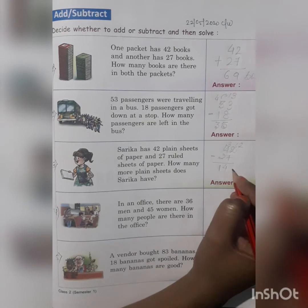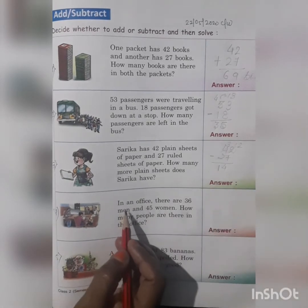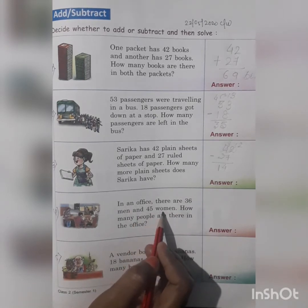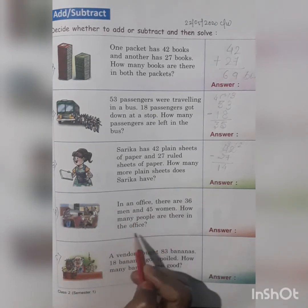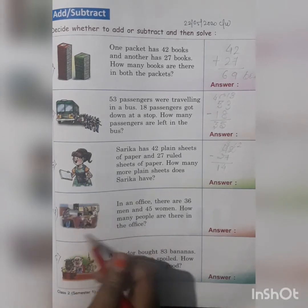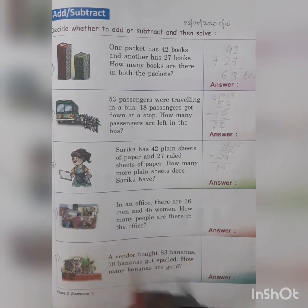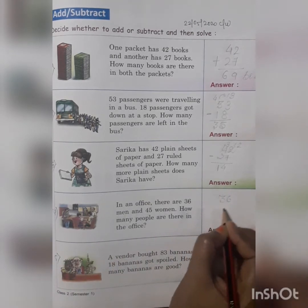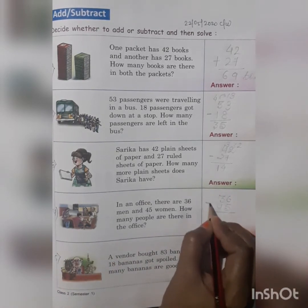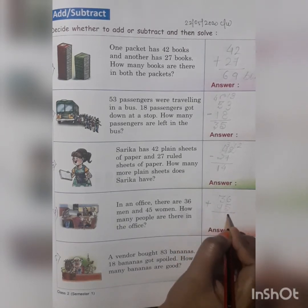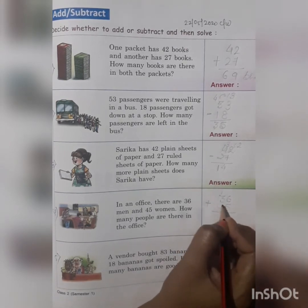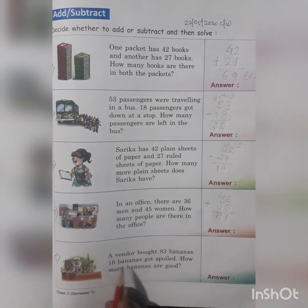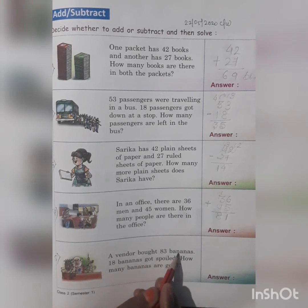Problem 4: In an office there are 36 men and 45 women. How many people are there in the office? We find the total, so we add: 6 plus 5 is equal to 11, write 1 and carry 1; then 3 plus 4 plus 1 carry equals 8. The answer is 81 people.